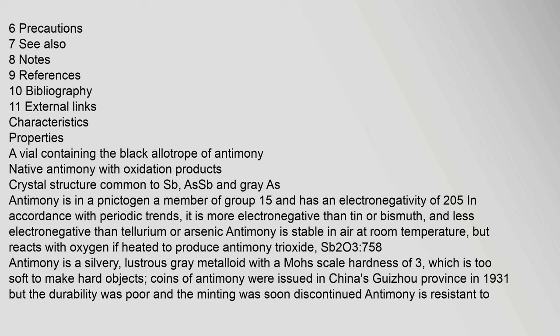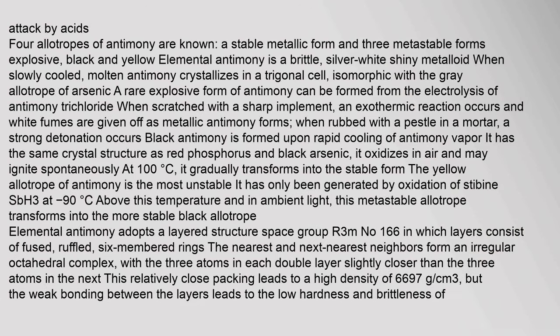Antimony is a silvery, lustrous gray metalloid with a Mohs-scale hardness of 3, which is too soft to make hard objects. Coins of antimony were issued in China's Guzhou province in 1931, but the durability was poor and minting was soon discontinued. Antimony is resistant to attack by acids. Four allotropes of antimony are known: a stable metallic form and three metastable forms — explosive, black, and yellow.